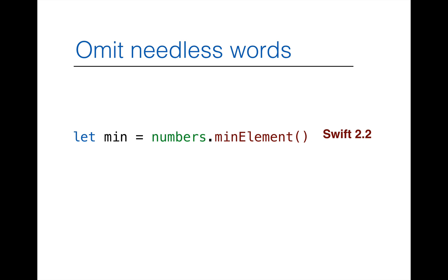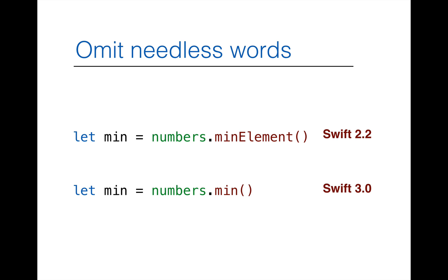Another example: with Swift 2.2, you'd use `minElement` to get the minimum value in a collection. With Swift 3.0, it becomes simply `min`. The word `element` was extra information that's not required, so it has been stripped. We omit anything which is not needed.